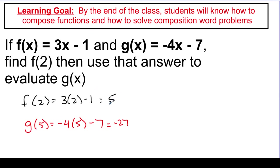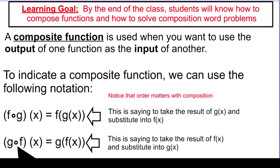So the output from f became the input of g, and that's what a composition is — where we take the output from one function and use it as the input of another function. We're combining functions together and asking what happens when I plug what comes out of one into another.